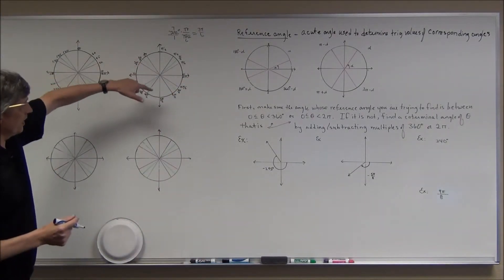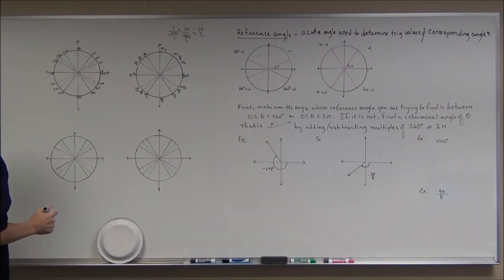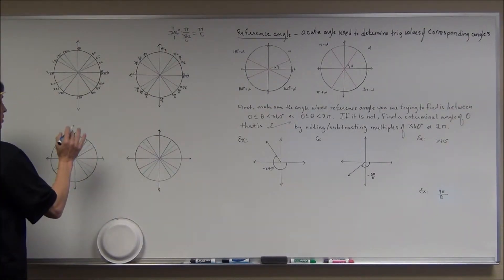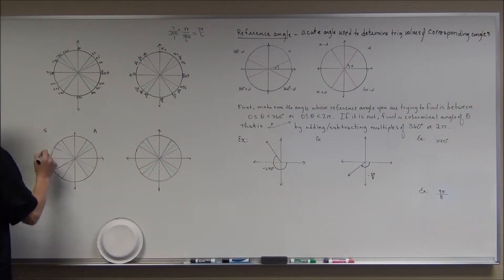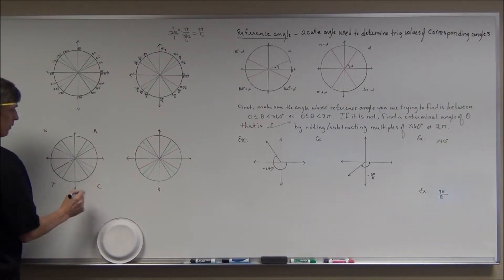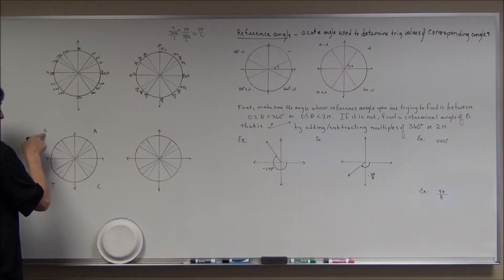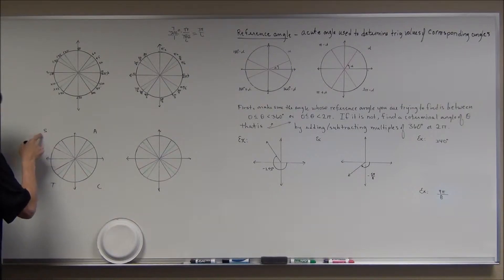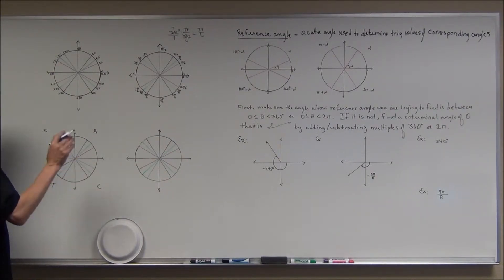Remember your quadrants using 'All Students Take Calculus.' All trig functions are positive in the first quadrant. Sine is positive in the second but not cosine or tangent. Tangent is positive in the third but not sine or cosine. Cosine is positive in the fourth but not sine or tangent.